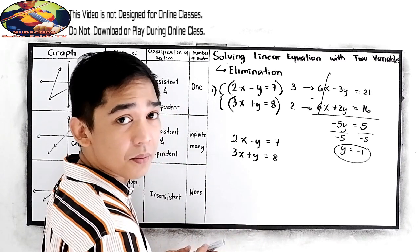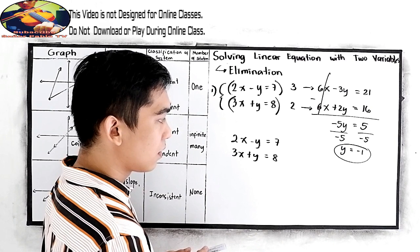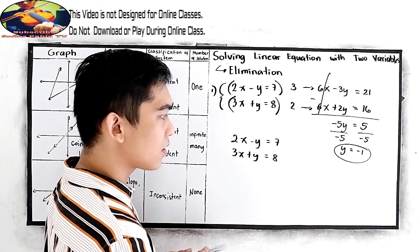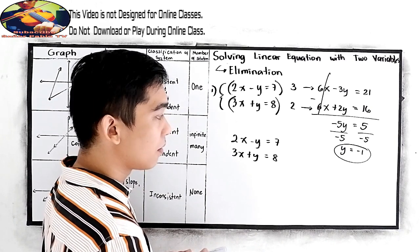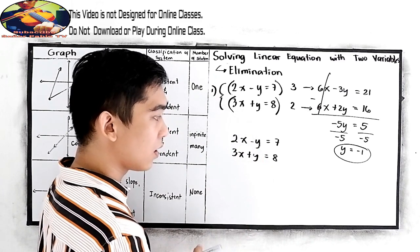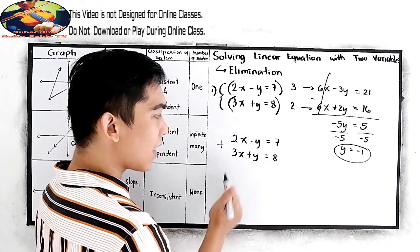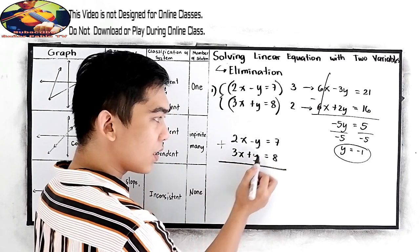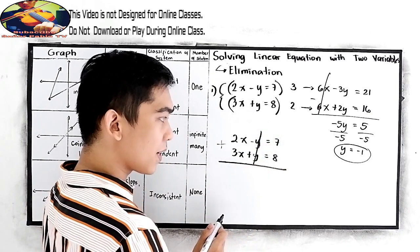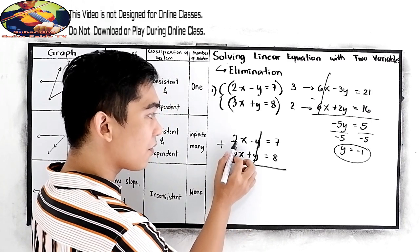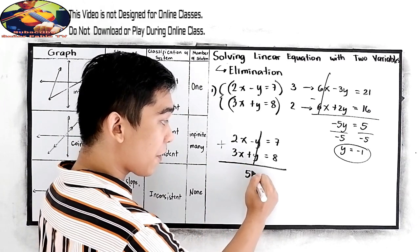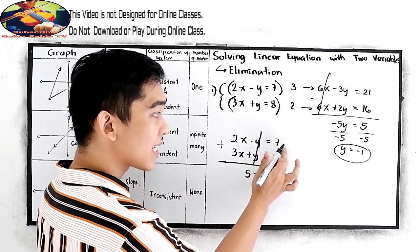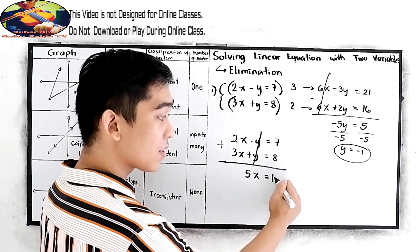So they are the same. They are just different in their sign, but our coefficient here is 1 and 1. So if we are going to add that, negative 1 plus positive 1 that will give us 0, so it will be cancelled out. Now we have 2x plus 3x, that is 5x, and 7 plus 8 will give us 15.